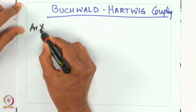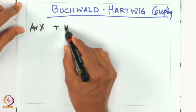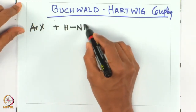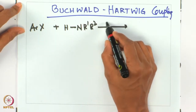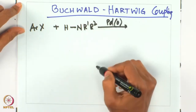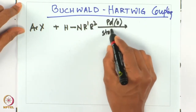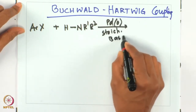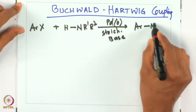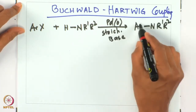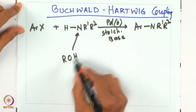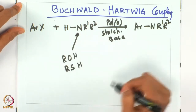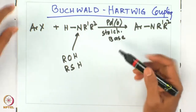In the name reaction, an aryl halide is reacted with an amine HNR' and R, where you can have two different R substituents - either a primary or secondary amine. A palladium(0) catalyst and a stoichiometric amount of base are required, and you get Ar-NR'R2. Instead of an amine, one can also have ROH or RSH and it could still be called Buchwald-Hartwig coupling.